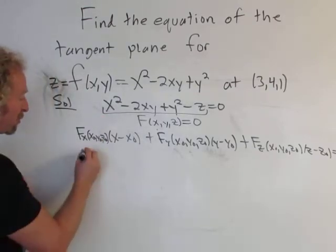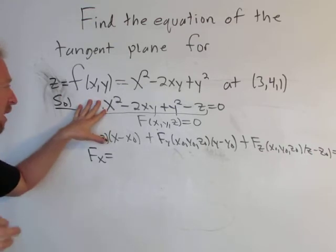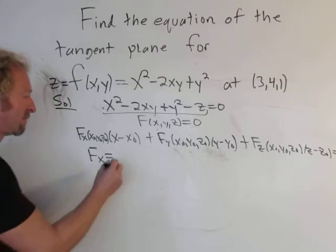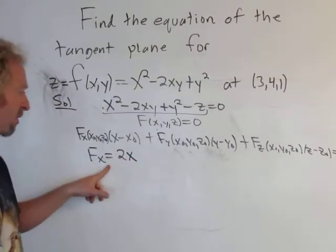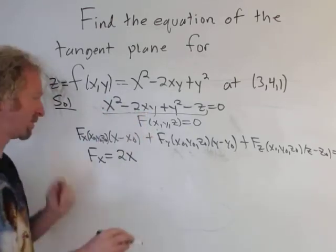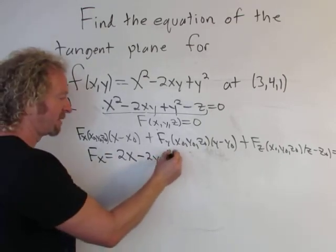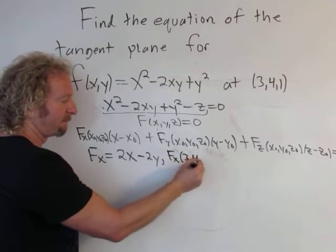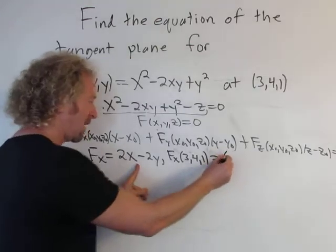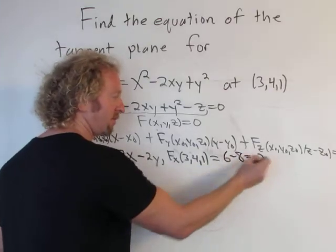For the partial with respect to x, we fix y and z and treat them as constants. The derivative of x² is 2x, and the derivative of -2xy with respect to x gives -2y. So F_x = 2x - 2y. Plugging in the point (3,4,1): 2 times 3 is 6, minus 2 times 4 is -8, giving us -2.